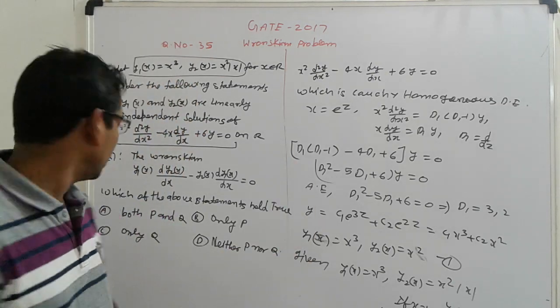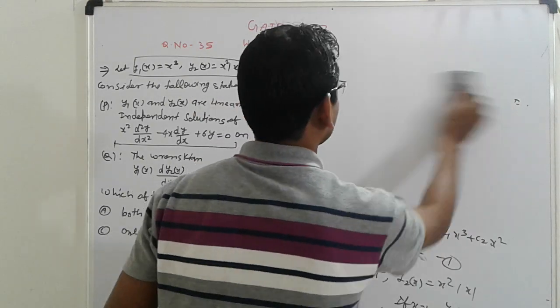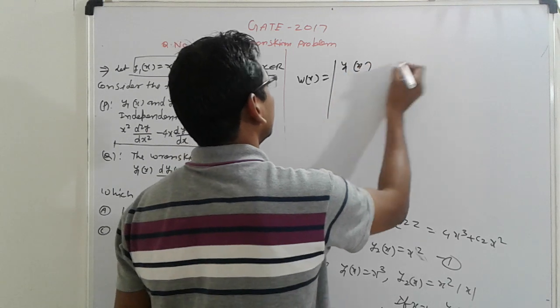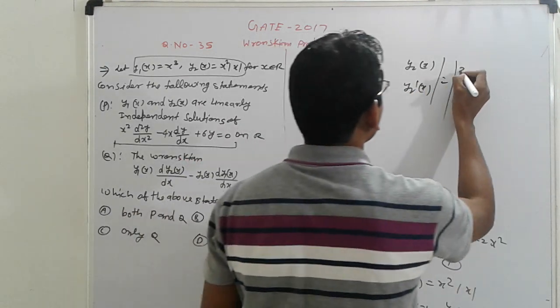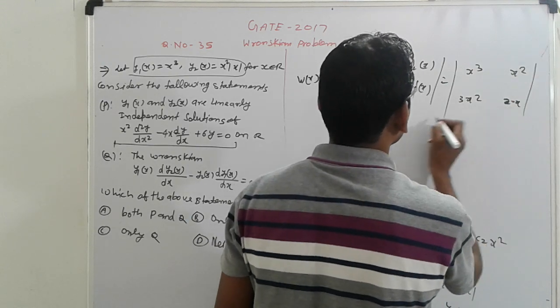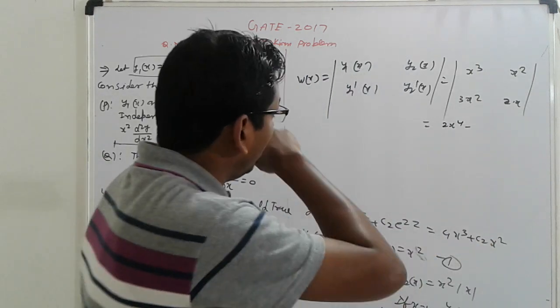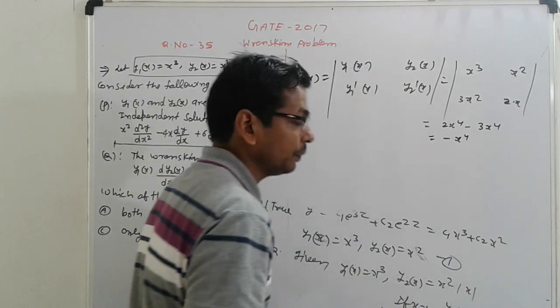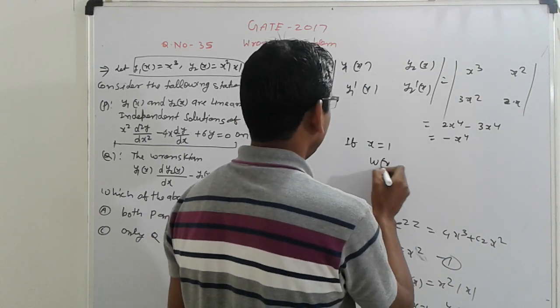Find out the Wronskian. Wronskian is Y1(X), Y2(X), Y1'(X), Y2'(X). This is Y1 = 3X². Here X², I mean X³ not X². Here 3X², here 2X. So this is 2X^4 - 3X^4. Here, if X equals 1, that is Wronskian not equal to 0.